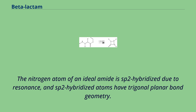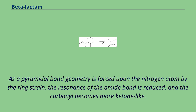The nitrogen atom of an ideal amide is sp2-hybridized due to resonance, and sp2-hybridized atoms have trigonal-planar bond geometry. As a pyramidal bond geometry is forced upon the nitrogen atom by the ring strain, the resonance of the amide bond is reduced and the carbonyl becomes more ketone-like.